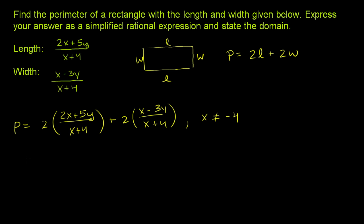And then we can simplify from there. The first thing I do is I just distribute this 2 on the numerator. So this is 2 times (2x plus 5y) is 4x plus 10y, and all of that's over (x plus 4). Plus, now distribute this 2: 2 times (x minus 3y) is 2x minus 6y. I just multiplied both terms by 2 over (x plus 4).